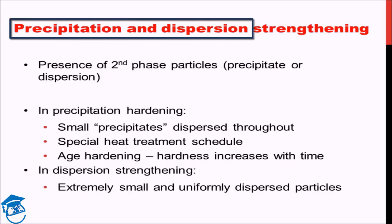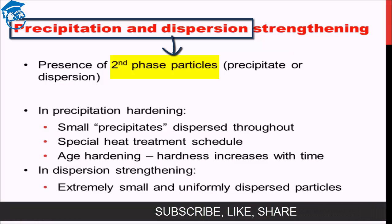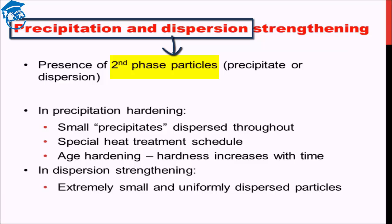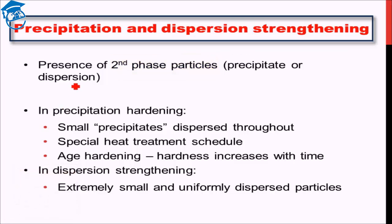Precipitates and dispersions are basically second phase particles. They are alien particles within a matrix of a metal. They do not belong to the same crystal; they might not belong to the same crystal structure and they are visually different entities present within a matrix. These precipitates or dispersions are uniformly dispersed throughout the matrix. For the time being, just assume that it is a physically different entity than the bulk of the system.